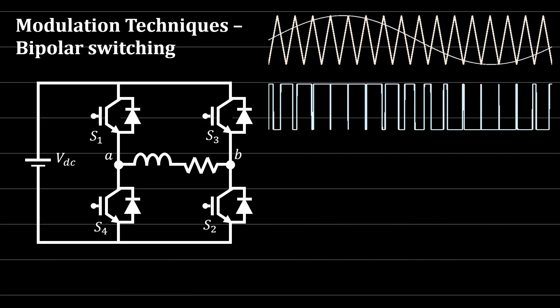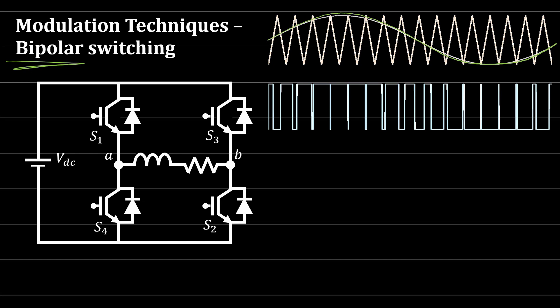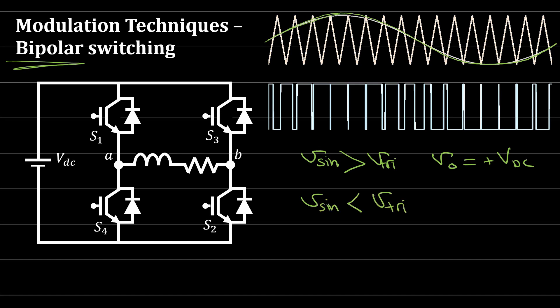We compare the sine wave with a triangular or sawtooth wave. One technique is bipolar switching, which ensures the output switches between plus VDC and minus VDC — hence the name bipolar. We compare the sine wave with the triangular wave: when the sine wave is larger than the triangular wave, the output is plus VDC; when the sine wave is less than the triangular wave, the output is minus VDC.